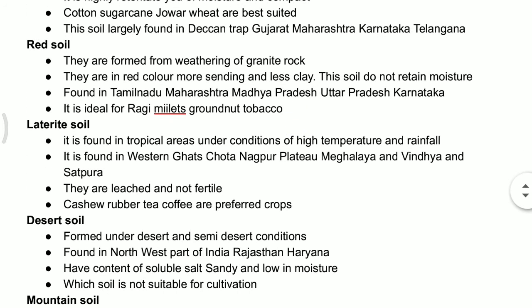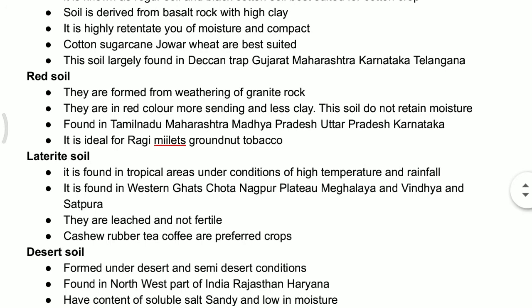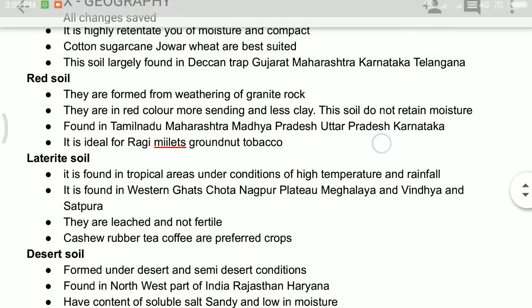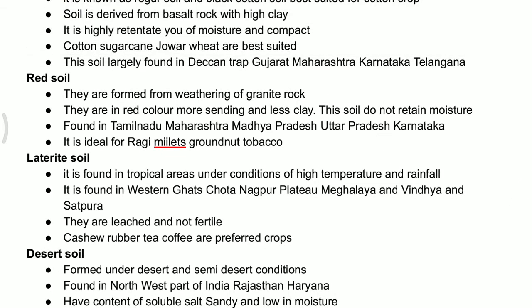One more soil is red soil. Red soil is formed by the weathering of granite rock and is red in color — as the soil name itself suggests. Why is it red in color? Because of iron oxide — it looks red in color.